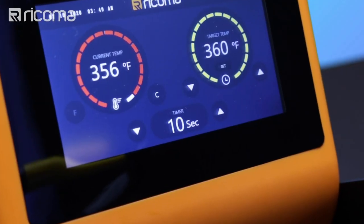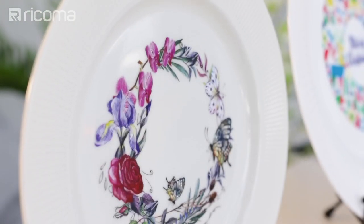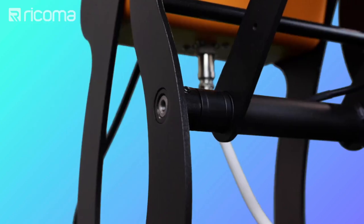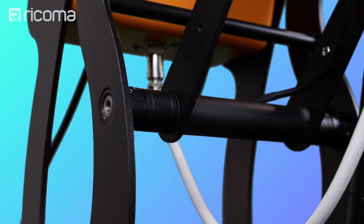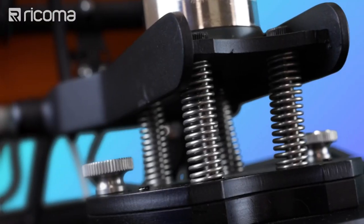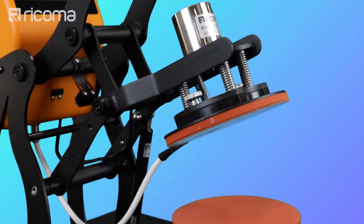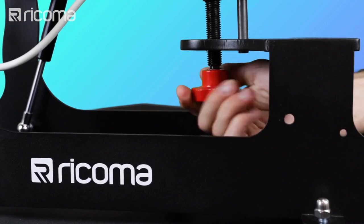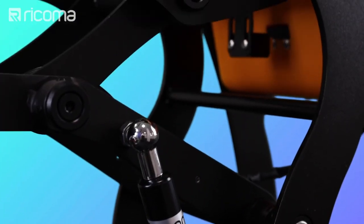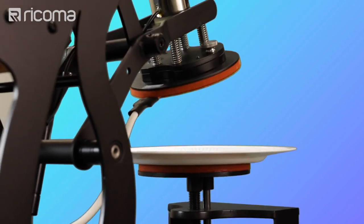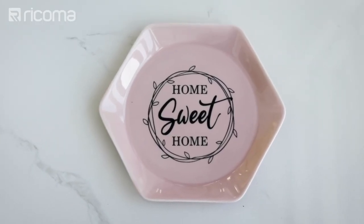No matter your skill level, you can turn a standard plate into beautiful home decor with this easy-to-use plate heat press. The plate heat press is manufactured with industrial-strength steel and aluminum, making it an exceptionally durable machine that can stand the test of time. The powerful clamp mechanism is designed to apply heat evenly onto the surface of the plate, guaranteeing a stunning final product.